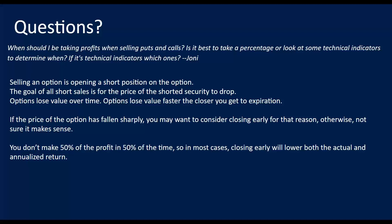Joni asked: when should I be taking profits when selling puts and calls? Is it best to take a percentage or look at some technical indicators to determine when? Selling an option is essentially opening a short position on the option. The goal of all short sales is for the price of the shorted security to drop — the most it's going to drop is to zero. Options lose value over time, but it's not linear. They don't lose the same amount or even the same percent every day. The amount of premium that's lost in options accelerates the closer you get to expiration.